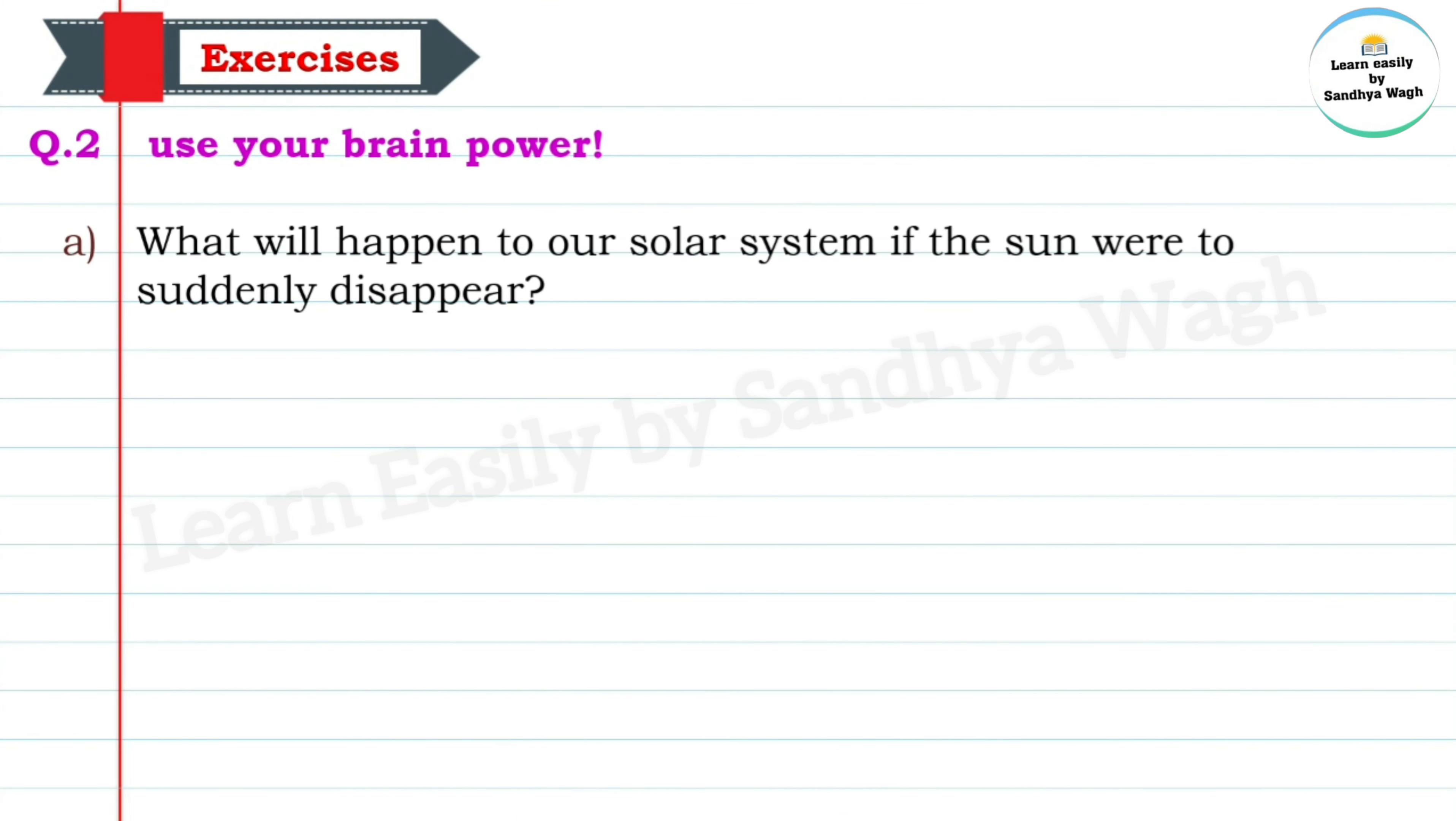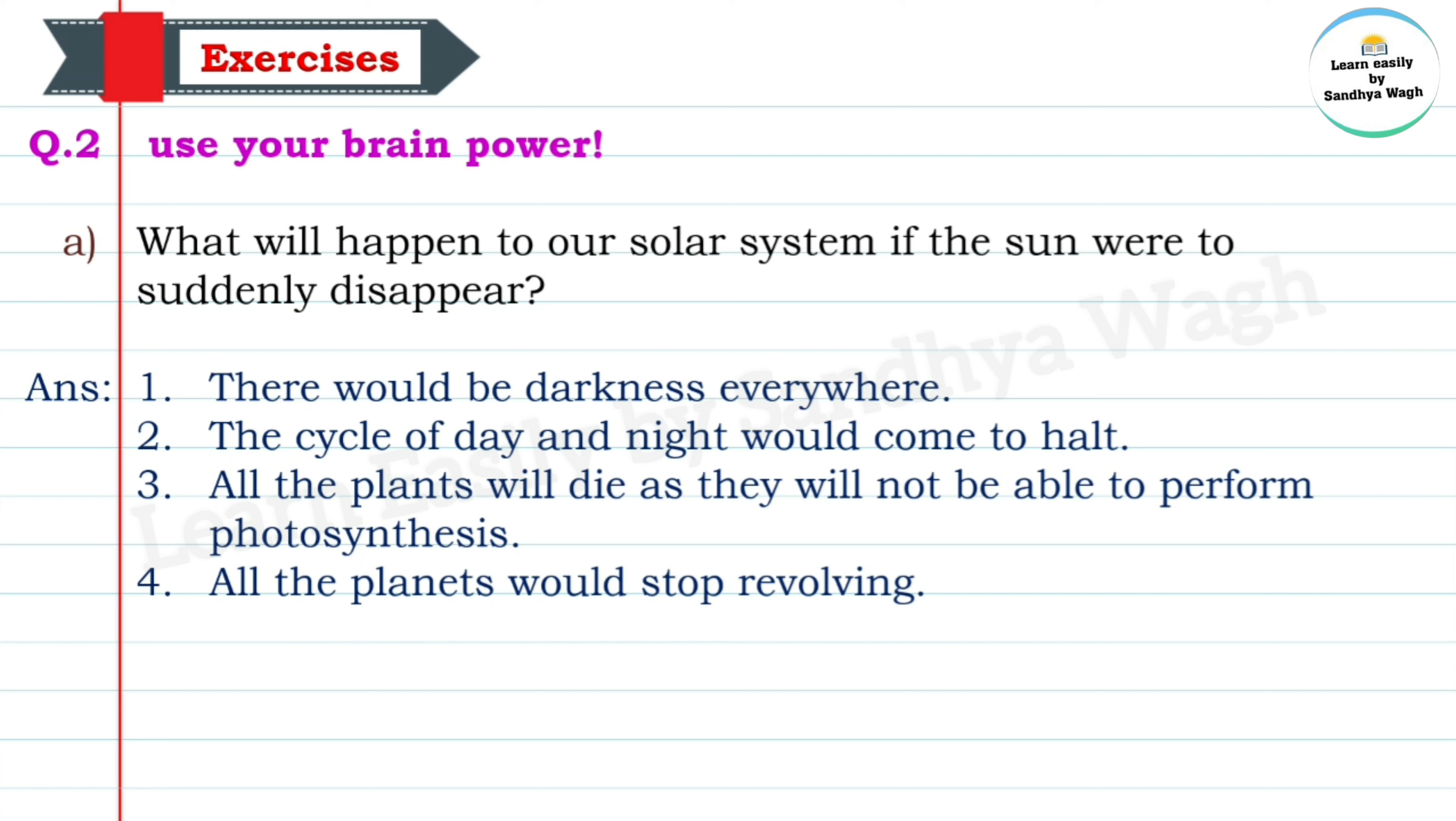Next question: Use your brain power. Question number 2: What will happen to our solar system if the sun were to suddenly disappear? Answer: There would be darkness everywhere. All the planets get light from the sun.